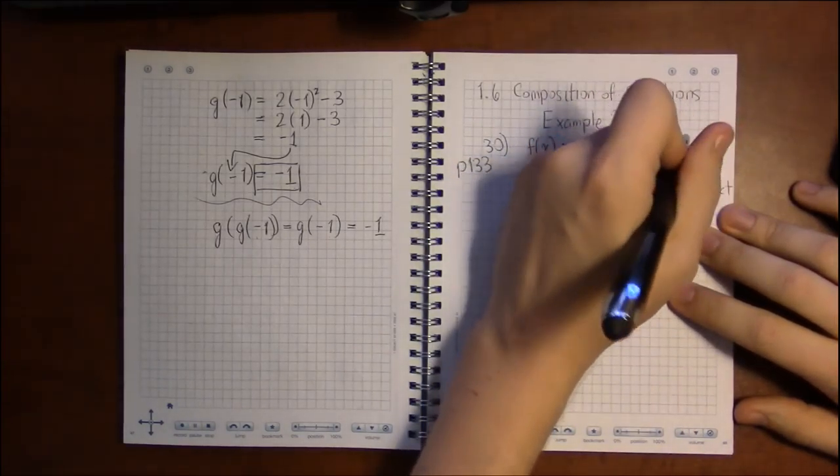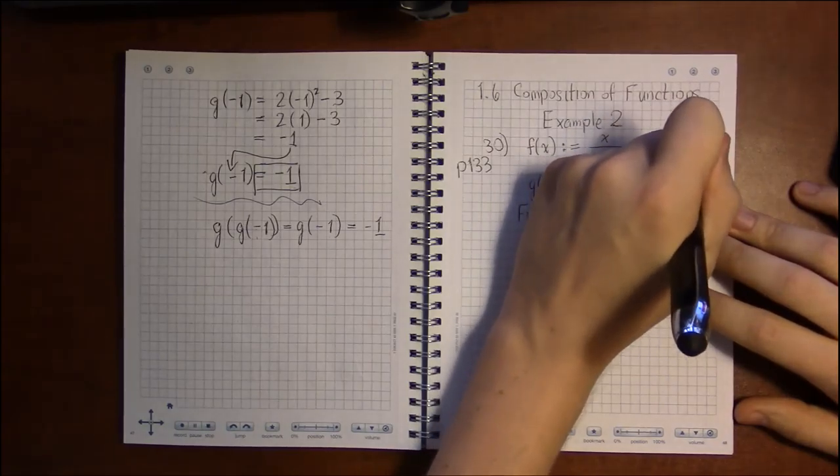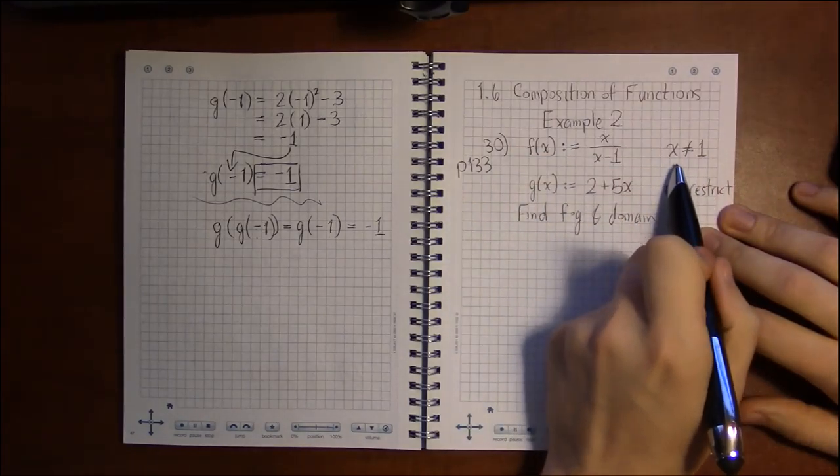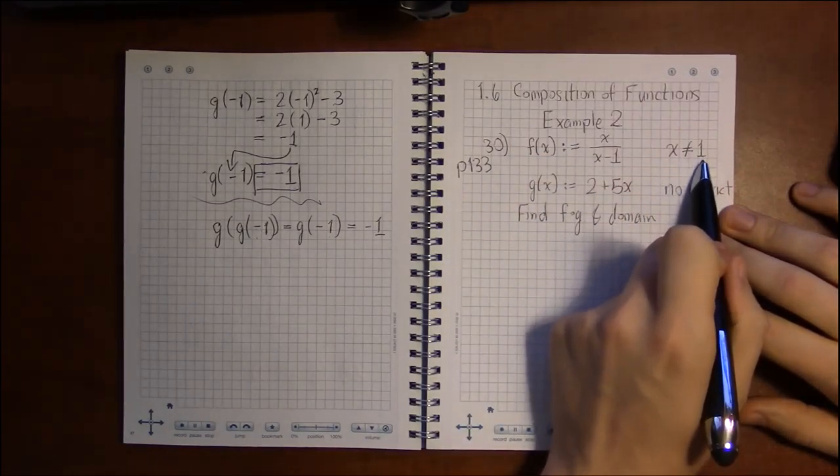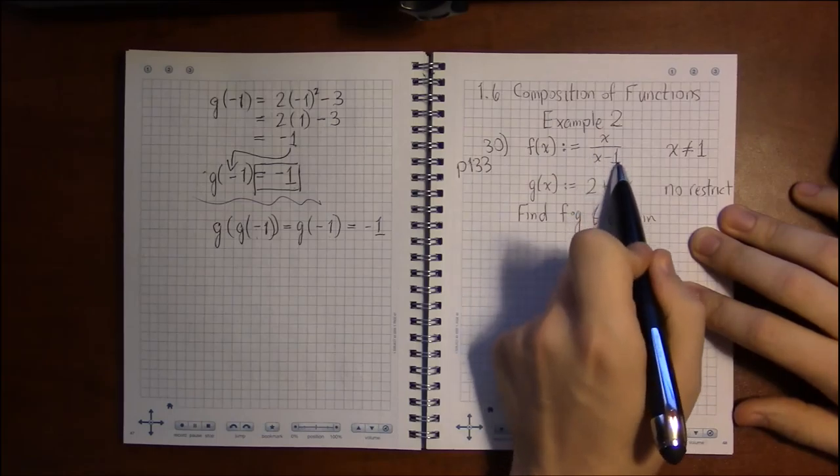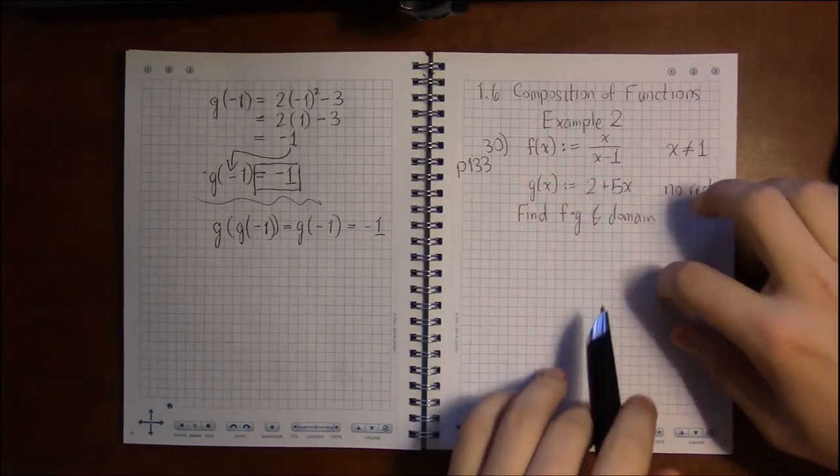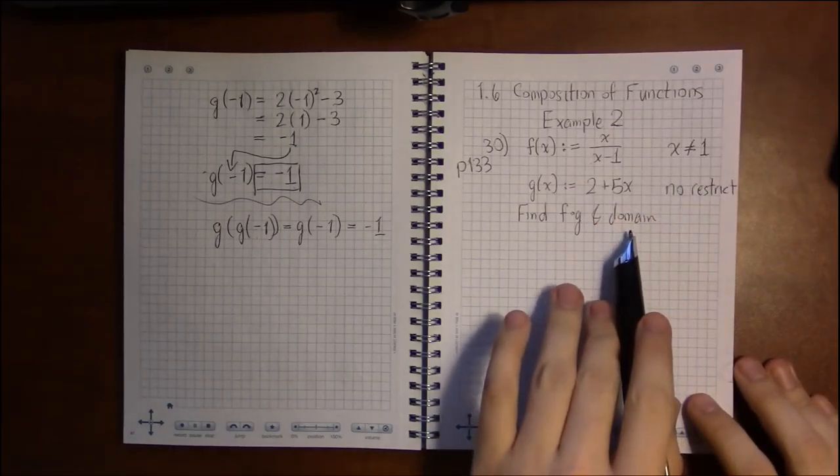And since we don't want that to happen, we don't want a 0 denominator, we say that x can't be 1. Because if x is not 1, then this denominator will not be 0, so we need that to find domain.